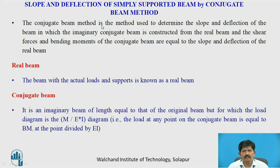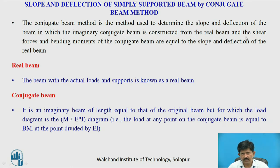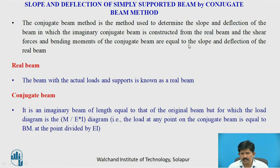The conjugate beam method is the method used to determine the slope and deflection of a beam, in which the imaginary conjugate beam is constructed from the real beam. The shear force and bending moment diagram of the conjugate beam are equal to the slope and deflection in the real beam.